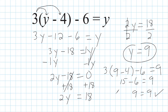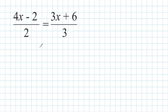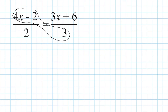Alright, let's do another example. This equation looks different from the first two — it looks just like a proportion. And what we're going to do is take advantage of our knowledge of proportions to solve it. We should remember that when you cross multiply, those two products are always going to be equal to each other. So we're going to rewrite this by multiplying (4x minus 2) by 3 and 2 by (3x plus 6).